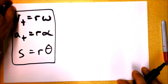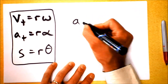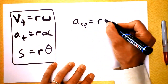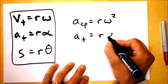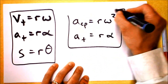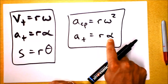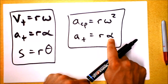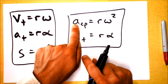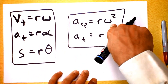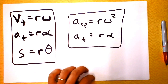One more distinction: a_CP = rω² versus a_T = rα. Tangential acceleration requires that we change angular velocity — α is the derivative of ω. Centripetal acceleration, however, simply requires that we have an angular velocity. Centripetal acceleration doesn't require any change in speed.